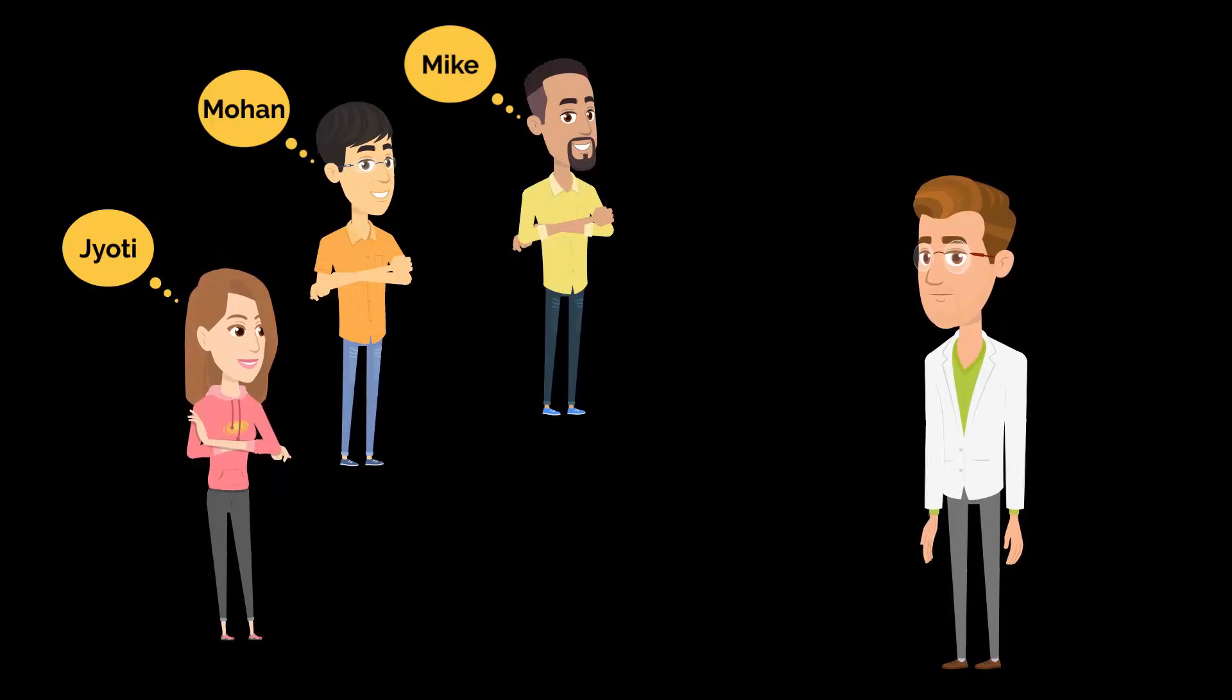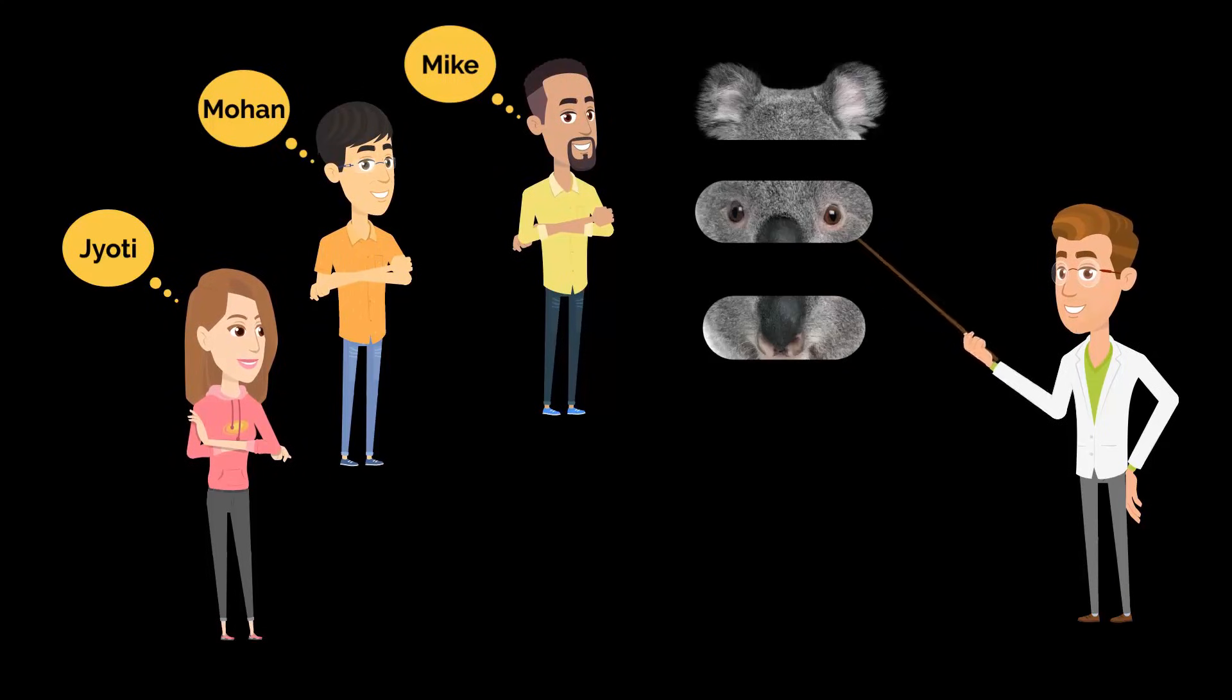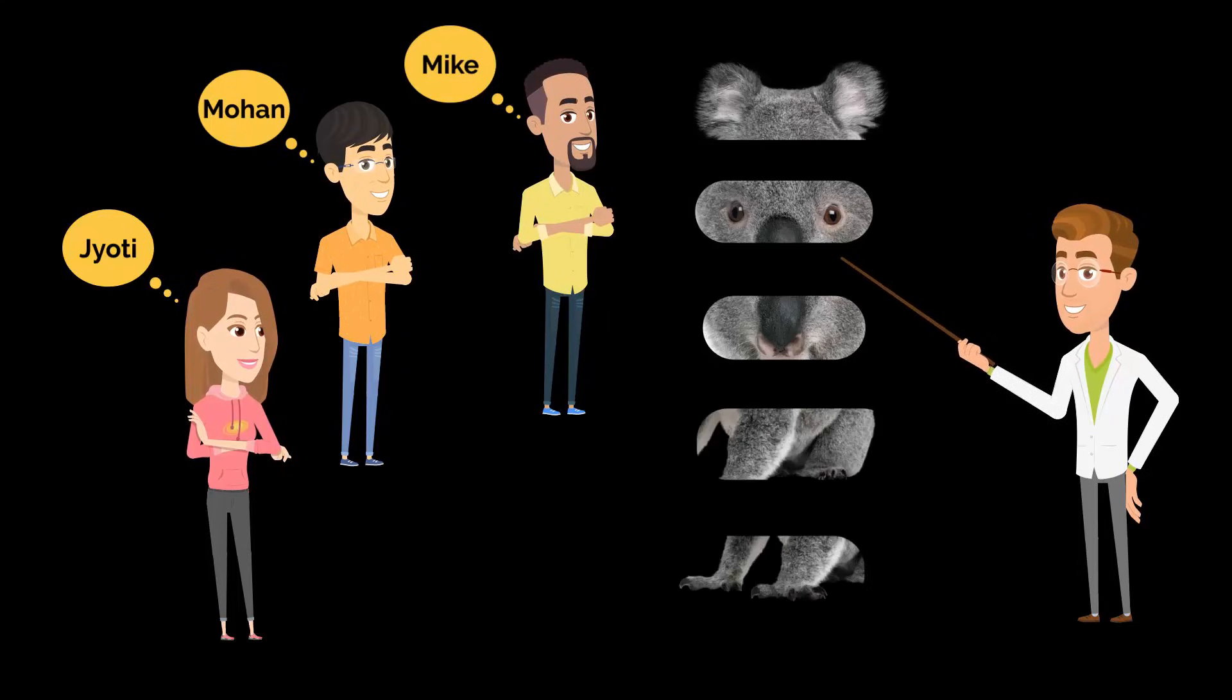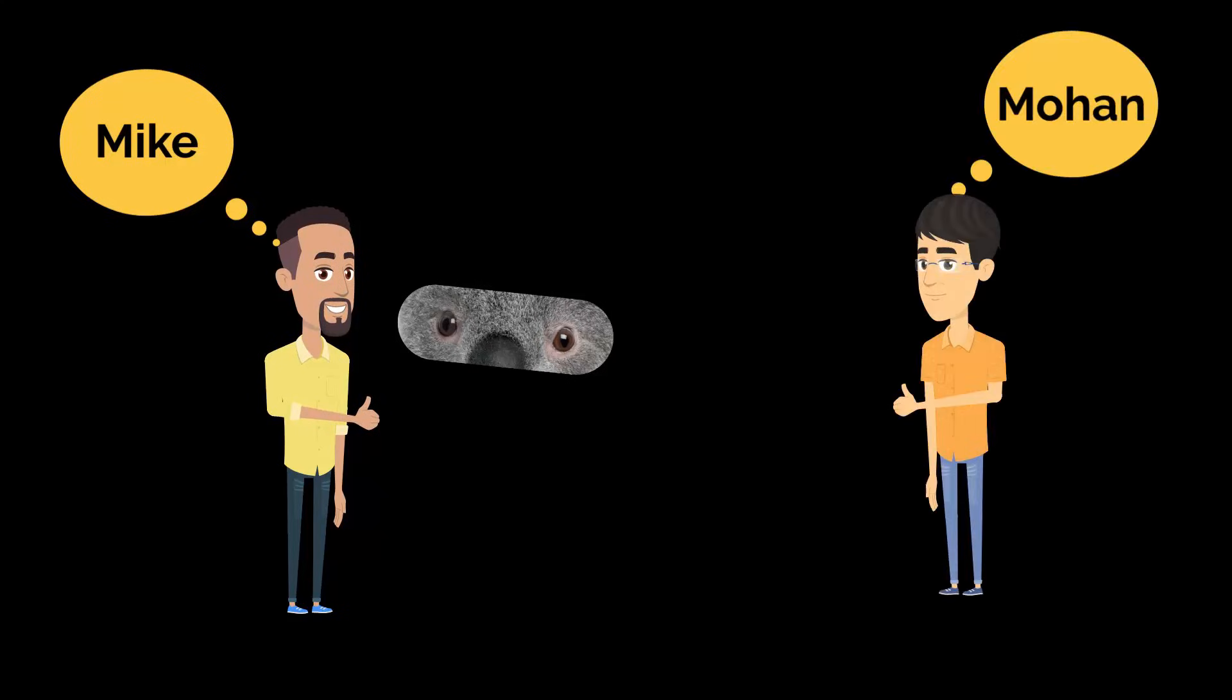Once these students are trained—and we'll look into how exactly you can train them, that is also a very important part of neural network, but we'll cover that in the later part of the video—but for now just assume that these students are trained to detect specific parts of koala's body. So Mike has become an expert koala eye detector, and similarly Mohan is an expert koala nose detector.